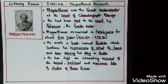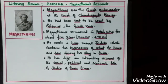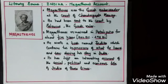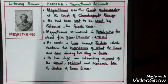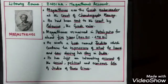What Megasthenes observed and heard during his stay, he wrote in a book called Indica. This contains his impressions of what he heard and saw during his stay in India. He left an interesting account of the social, political, and economic life of India of those days. He was very much impressed by Chandragupta Maurya's rule.